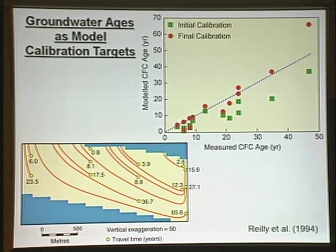By doing this — if we use groundwater ages as well as just heads and hydraulic conductivities to calibrate our model — we actually get a much more robust model than if we just use hydraulics.